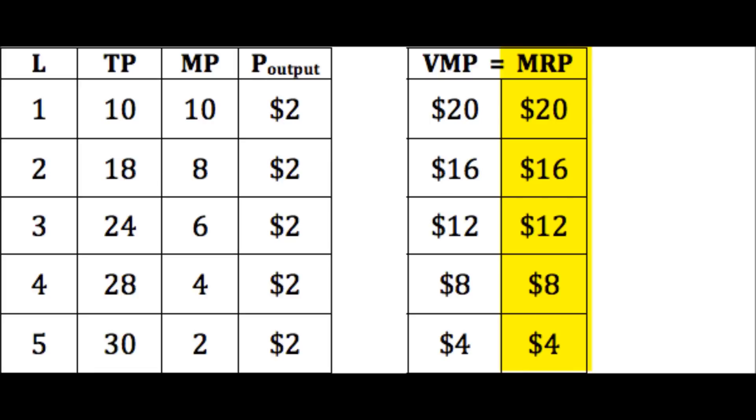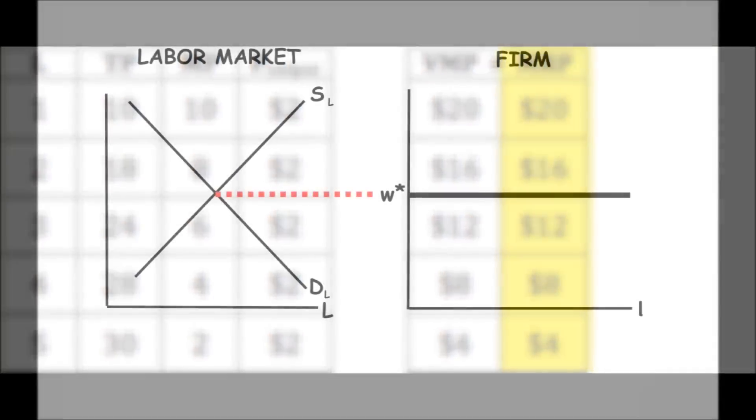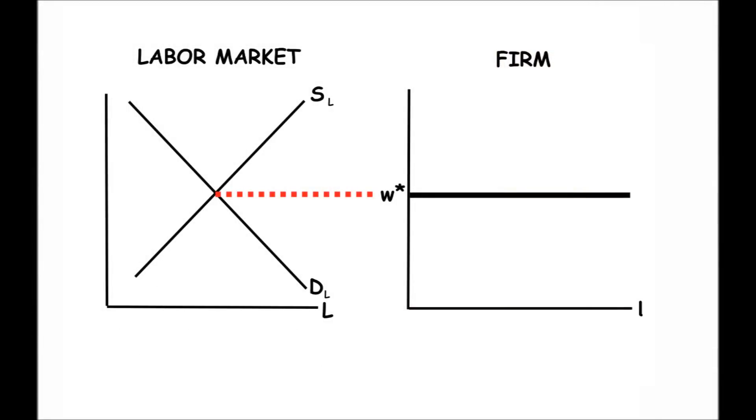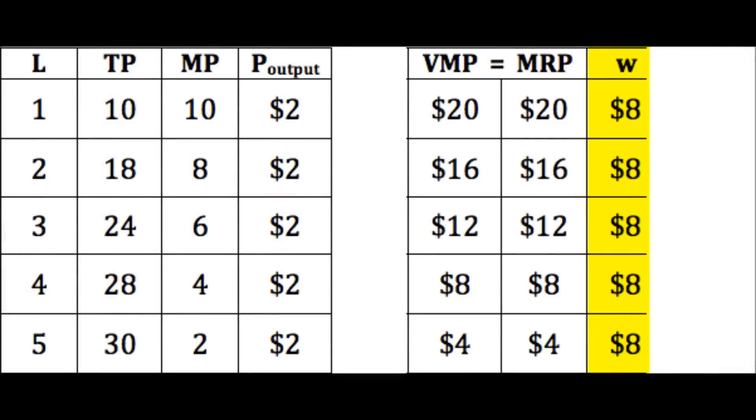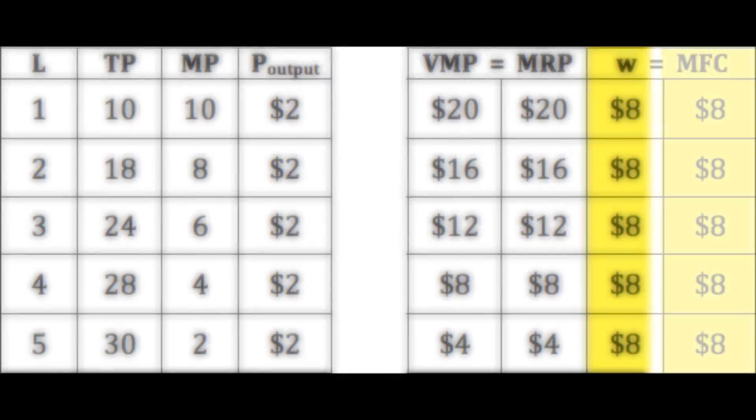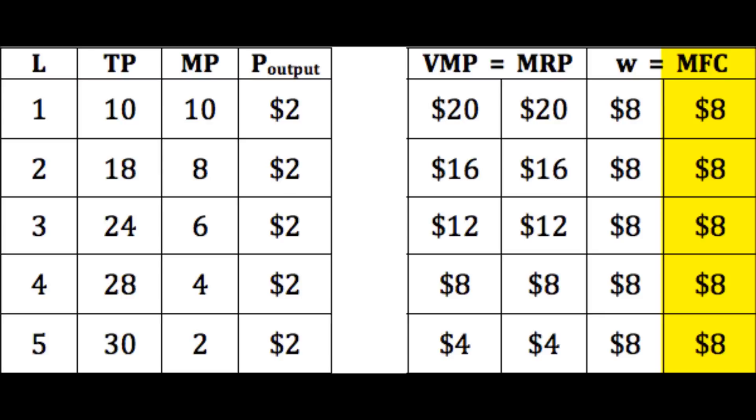In the perfectly competitive output and factor market scenario, we also found that the wage is constant, determined by labor market forces, let's say at $8. A constant wage also meant the added cost of bringing in another worker, the marginal factor cost, would be constant at that wage, since each worker is hired in at that same wage.